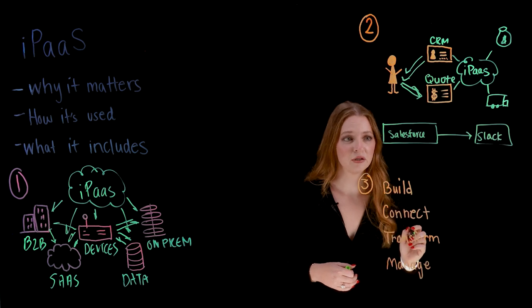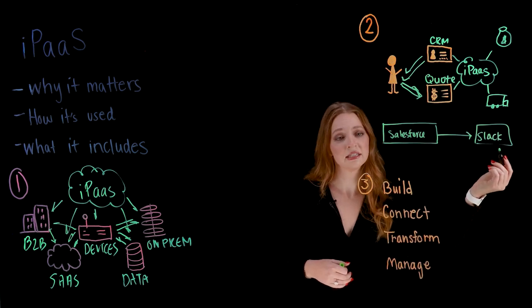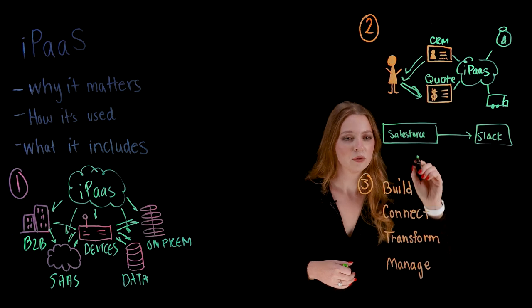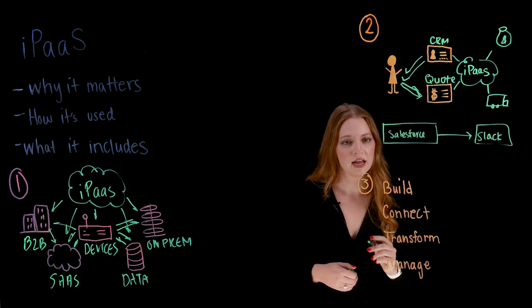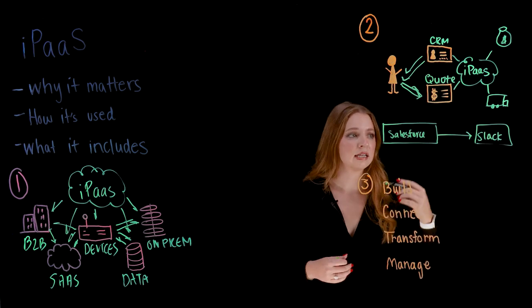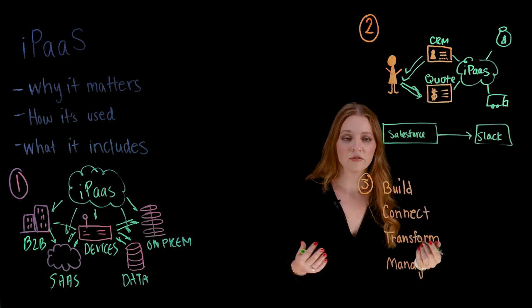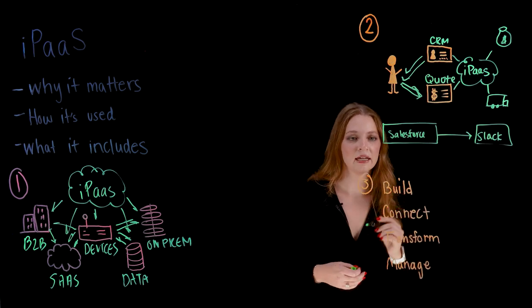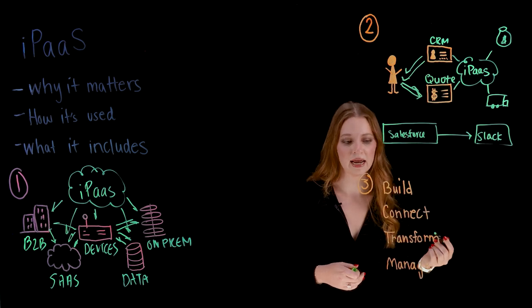This is part of the build piece of it. Taylor is able to build this integration between these two different systems. How is she able to do that? Leveraging connection points. Often you'll see with common SaaS applications like Salesforce and Slack, there are out-of-the-box connectors that make these connections even faster for her to use.